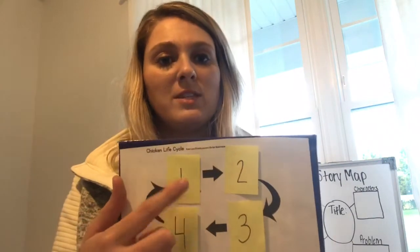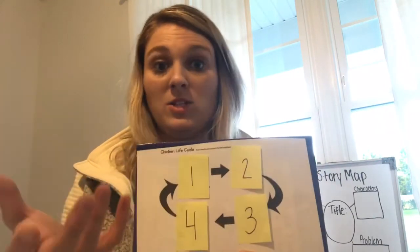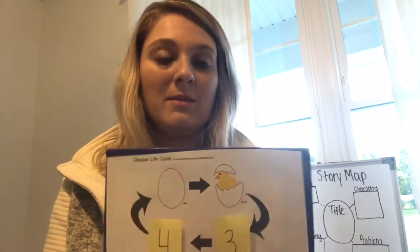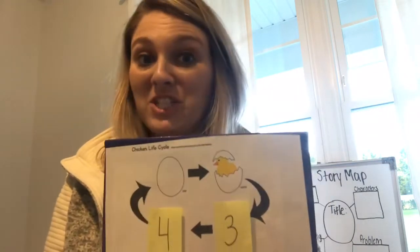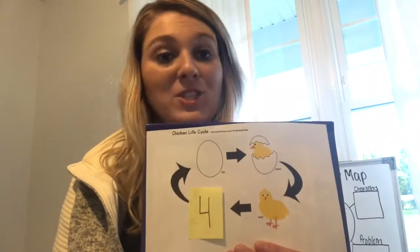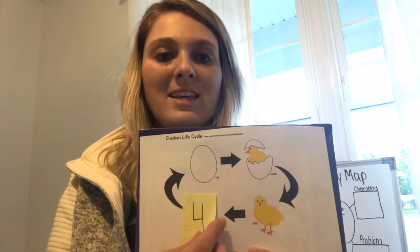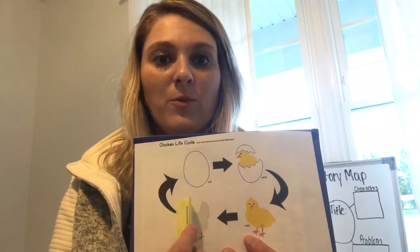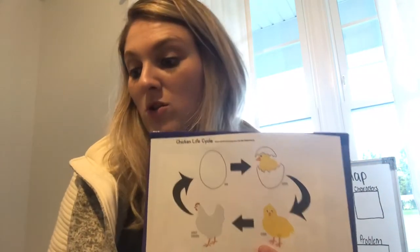So the first thing that happens — it starts out as a what? What does a chick start out as? It starts out as an egg. Next, or second, it hatches. When the egg starts cracking and the animal starts coming out, we call that hatching. Third, we have a chick. And the last, or fourth thing that happens — what does it turn into? A chicken, an adult chicken.